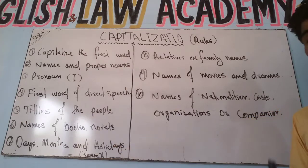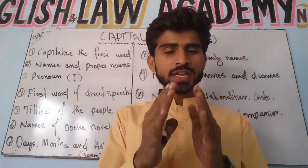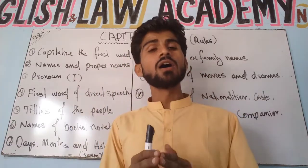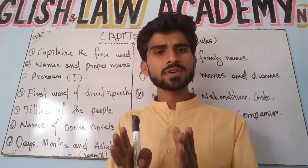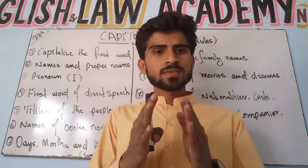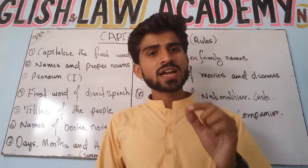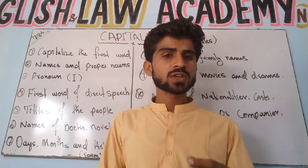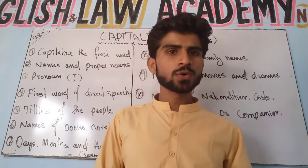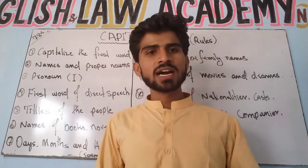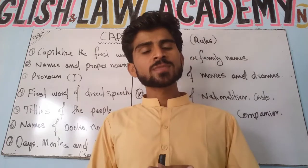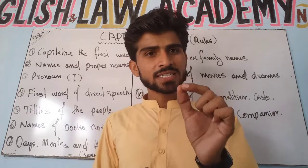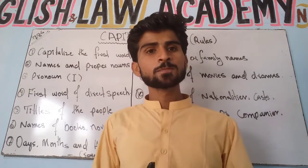Rule six: names of books and novels. Whenever you write the names of books, novels, or any literary work, it is necessary to write them with capital letters. For example, Rind and Marding, Oxford English Grammar, Pakistan Final Code, and the Criminal Procedure Code — the first letter of these must be capitalized.